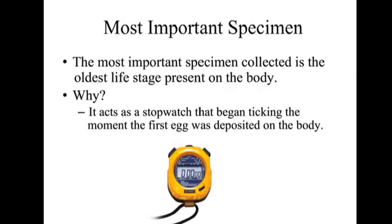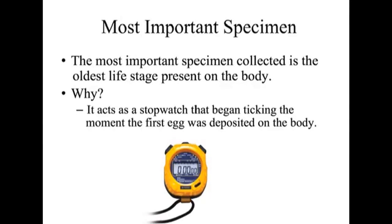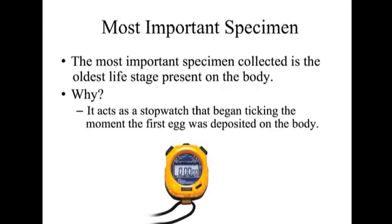The most important specimen is the oldest specimen that we collect on the body. It acts like a stopwatch that began the moment the organism died, or the moment the first egg was laid. The oldest organism is going to tell you the longest stretch of time — the longest period of post-mortem interval. If you pick up an egg when the body is covered in pupae, that's not going to give you as much information as the pupae, which is a later stage of development.